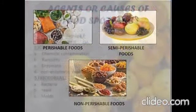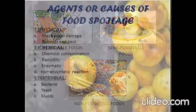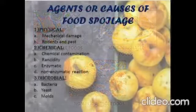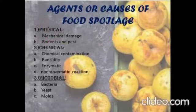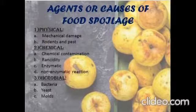While talking about food spoilage, we should also know what agents cause food spoilage. These agents are broadly classified into three types: physical spoilage, chemical spoilage, and microbial spoilage.